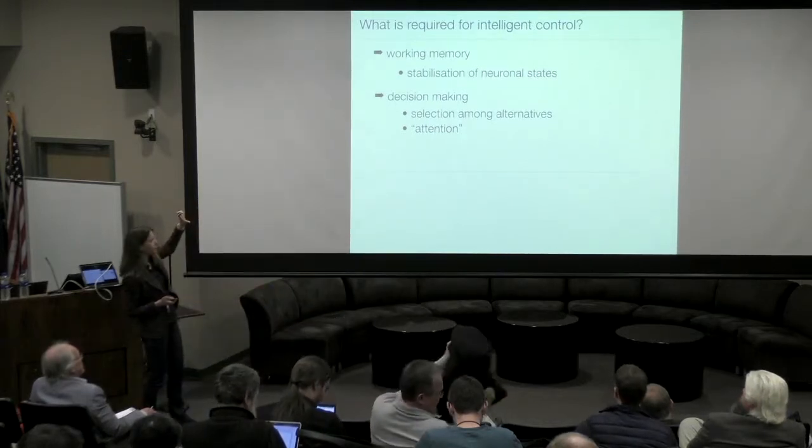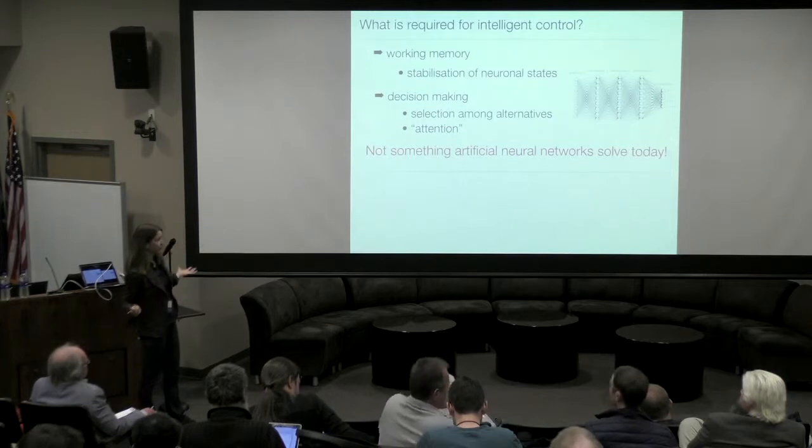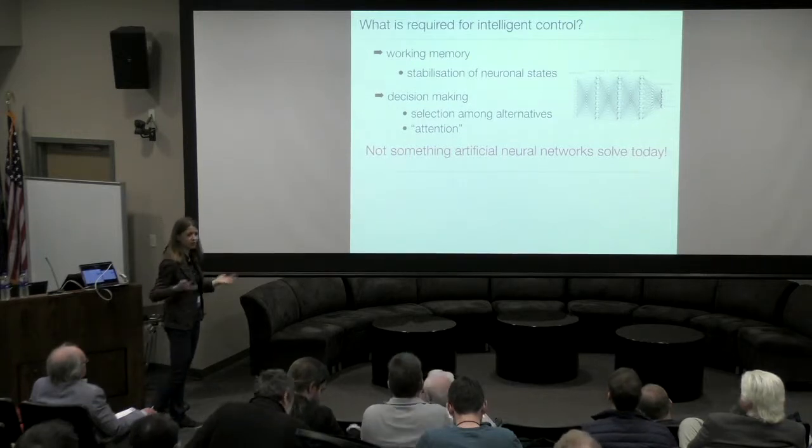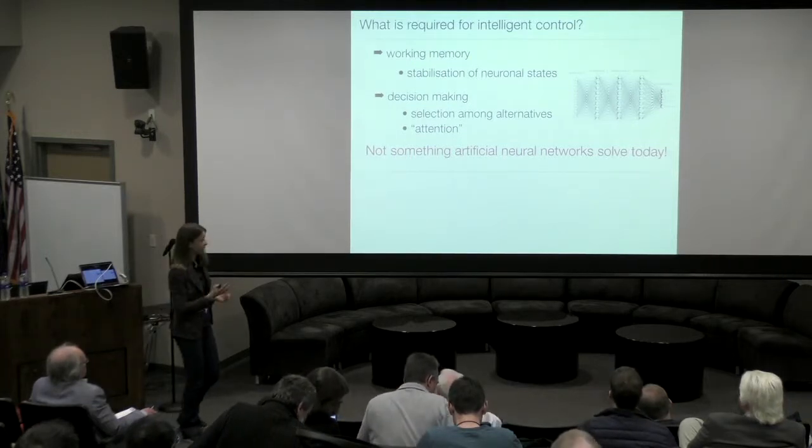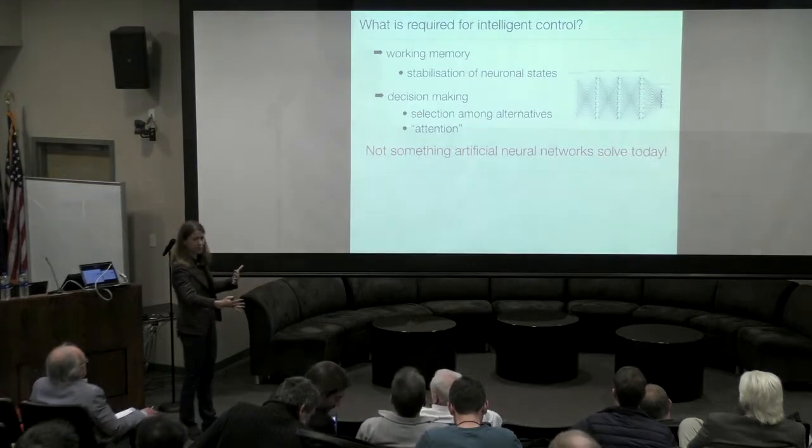Interestingly, these two properties is exactly what today's deep convolutional neural networks don't do. They're feedforward mappings. Input is presented, output is produced, input is gone, nothing happens. There's no state in this network, so there's no working memory. There's also no decision making. If certain input is presented, certain output will follow. It cannot select one or the other depending on whichever internal dynamics.